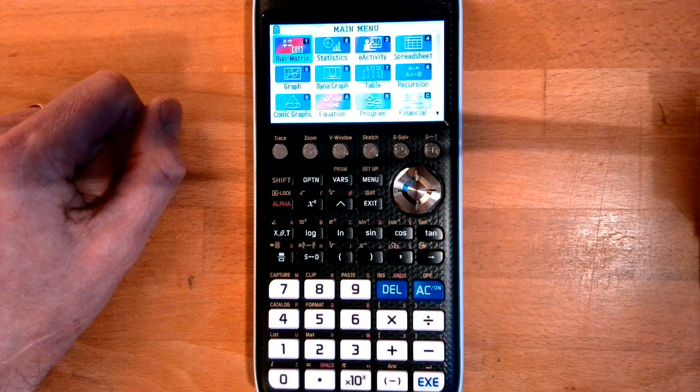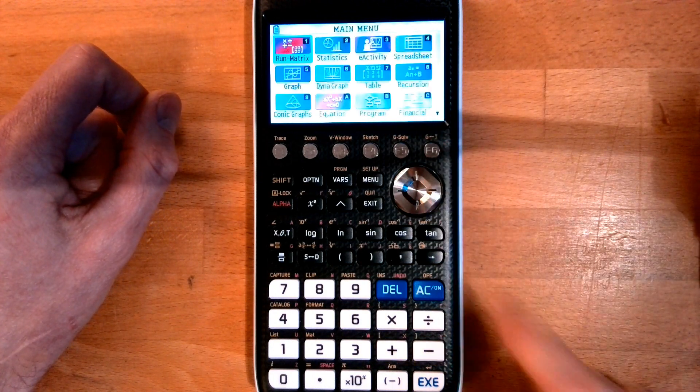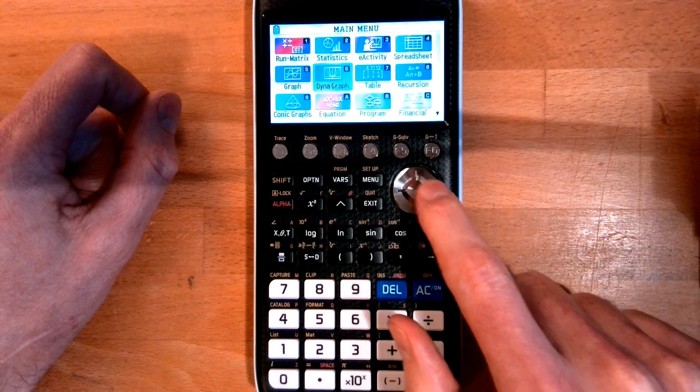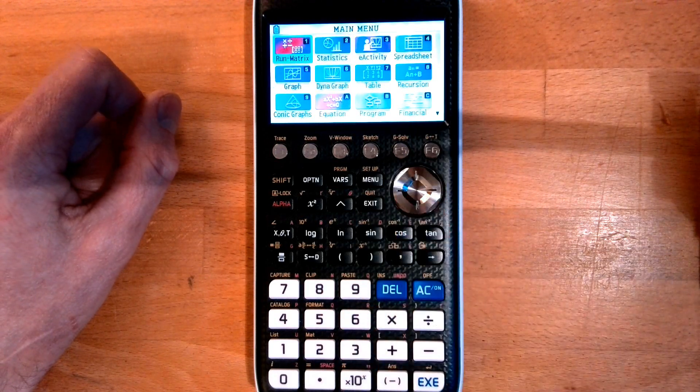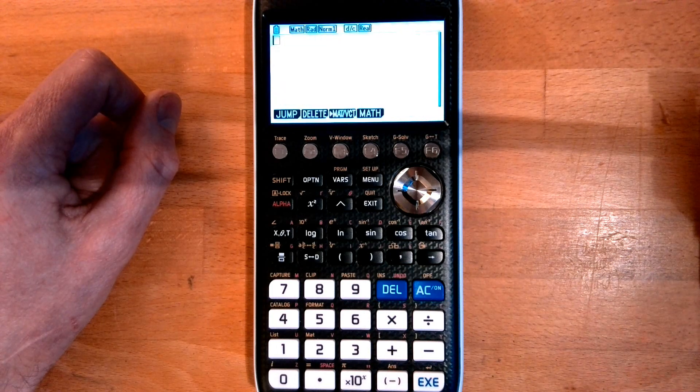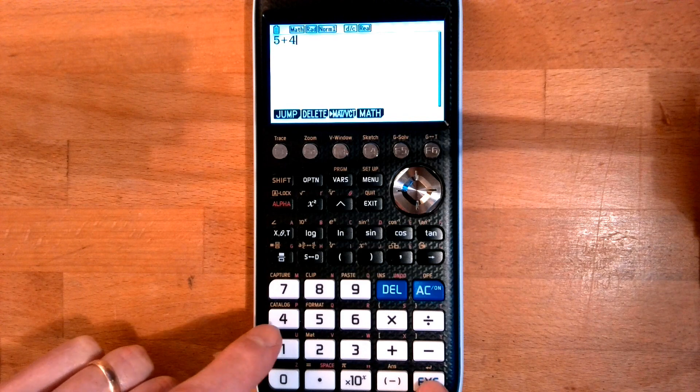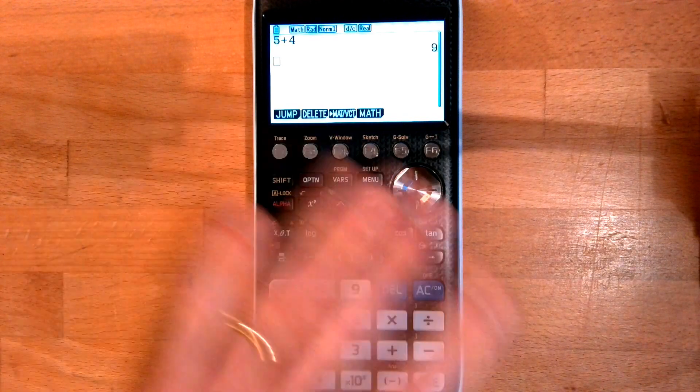So you've got your cursor here that can move around that display. Run matrix is where you do your sums. So there we go, five plus four equals nine, and it's got all manner of options and we'll play with those as we go through the summer.